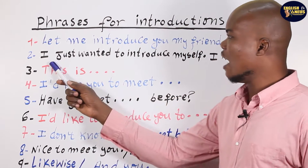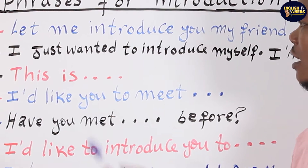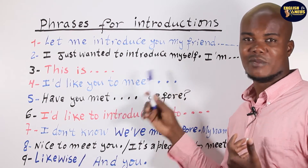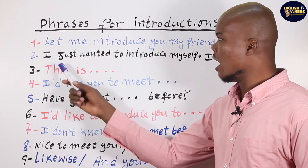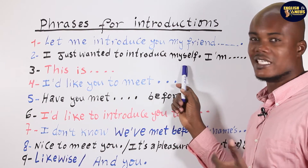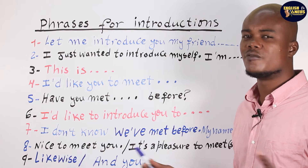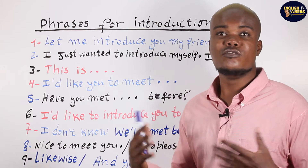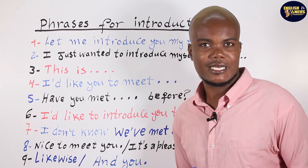Good. 'I just wanted to introduce myself.' 'Myself' means 'tete moun' — oneself. Repeat that with me: 'I just wanted to introduce myself. I am Jack.' That is one way you can introduce yourself in English. Now let's continue with other ways you can introduce yourself.